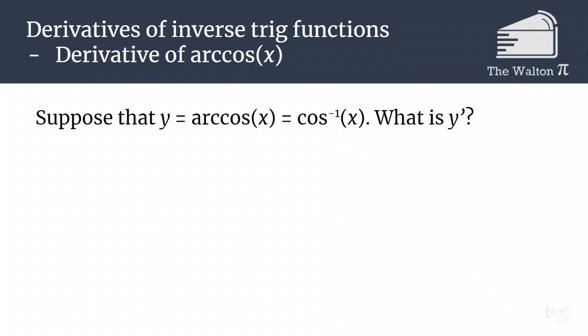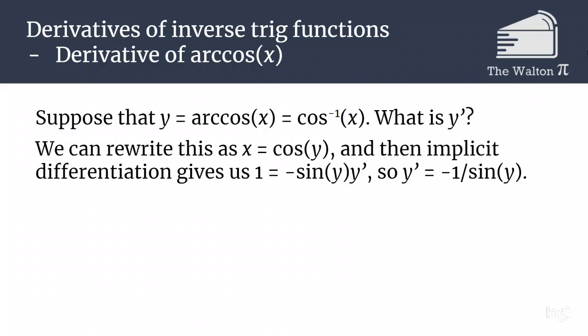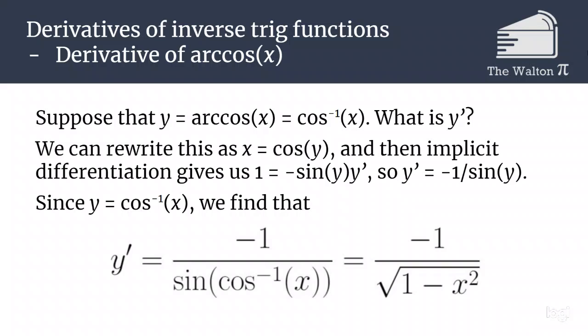We can do the same thing if we were given y equals arc cosine of x. What is y prime there? Well, we rewrite this as x equals cosine of y, then implicit differentiation gives us 1 equals negative sine of y times y prime. So y prime is negative 1 over sine of y. And if we plug in y equals inverse cosine of x, we end up with y prime is negative 1 over the square root of 1 minus x squared.